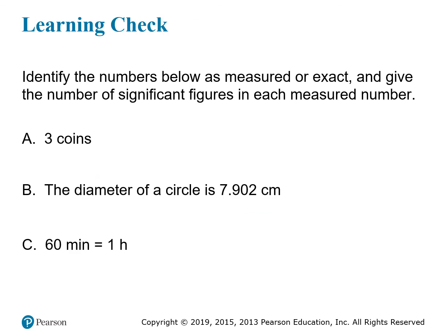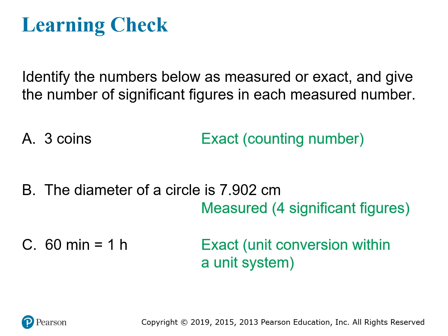To finish out this section, let's take a look at some numbers and figure out whether they're measured or exact. The numbers we're looking at are three coins, a circle diameter of 7.902 centimeters, and the relationship between minutes and hours. The first one is simple enough because you can count pennies and don't typically encounter a fraction of one — this makes it an exact counted number. It actually has an unlimited number of significant figures; we just don't write out an infinite number of zeros after the decimal. The next one is clearly the result of a measurement — length is a continuous property typically measured with a ruler or tape measure, and this particular number has four significant figures. The last example, that 60 minutes equals one hour, uses units from the same system, so we can conclude this is an exact relationship with unlimited precision.